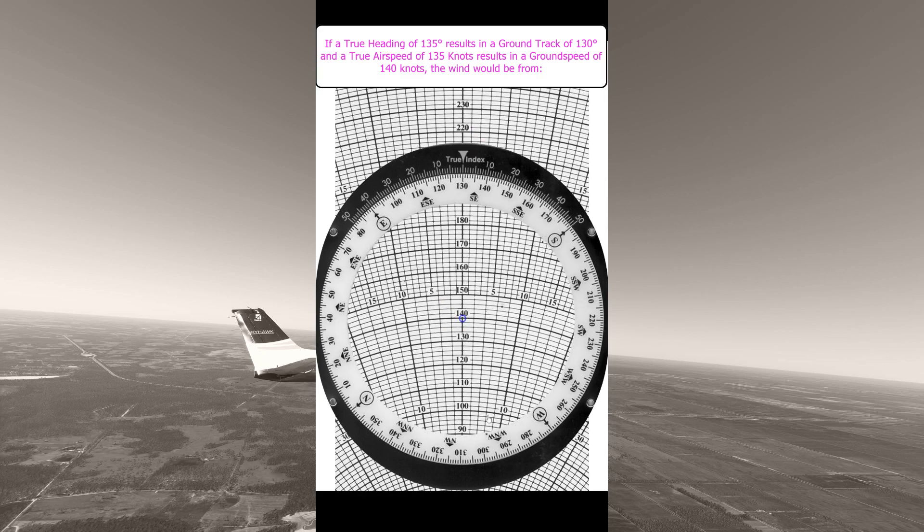You know that you've made a 5 degree to the right heading correction for the wind. You also know that the true airspeed is 135 knots so you're going to place the dot 5 degrees to the right on the true airspeed of 135.